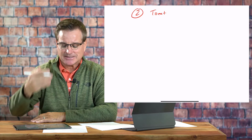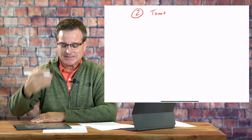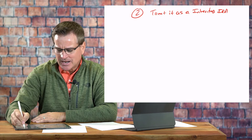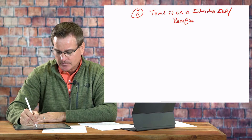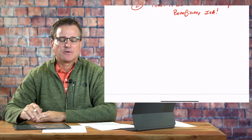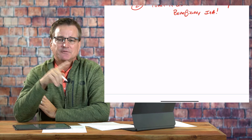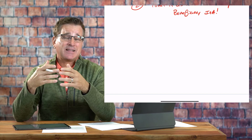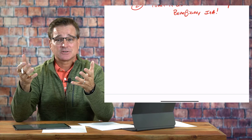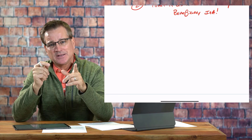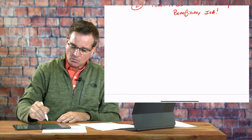Option number two is they could treat the deceased IRA as an inherited IRA, which some custodians also call a beneficiary IRA. Now this is confusing to some folks who say, 'I am inheriting my spouse's IRA, so it is an inherited IRA.' The important distinction is that in option one, they treated the IRA as their own and could even roll over the funds into their own IRA at a different custodian. Option two is very different — they're treating the IRA as an inherited or beneficiary IRA, and it's titled very differently.